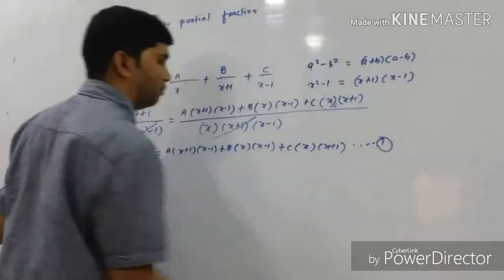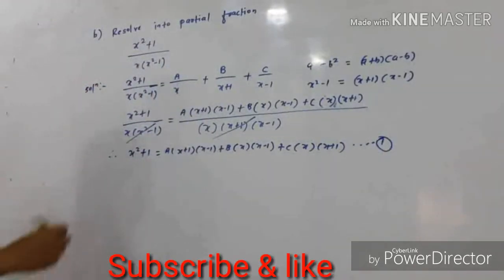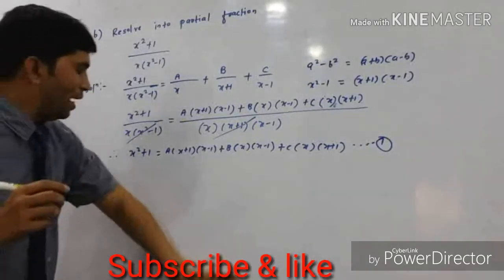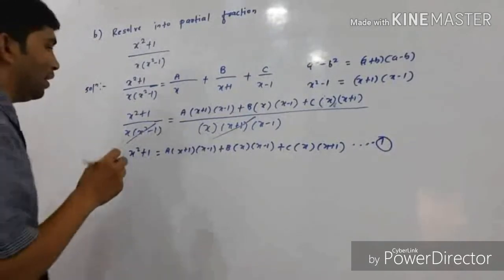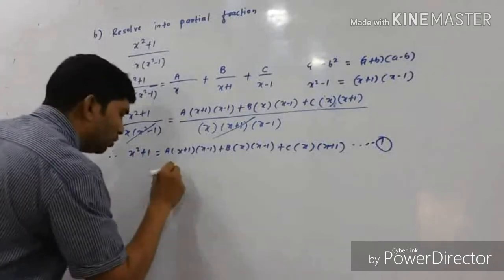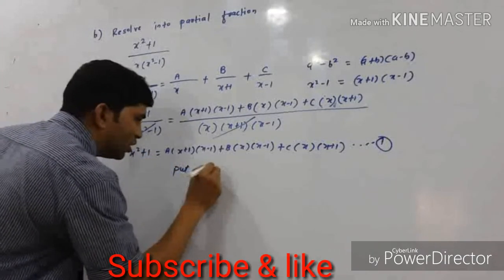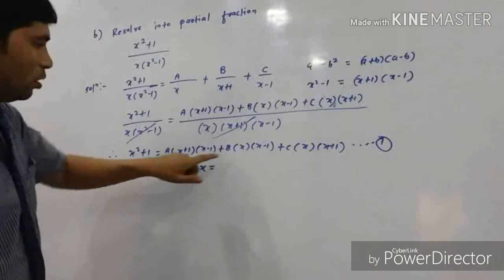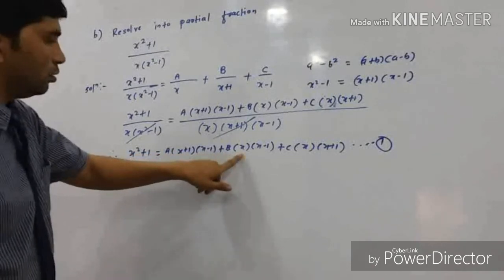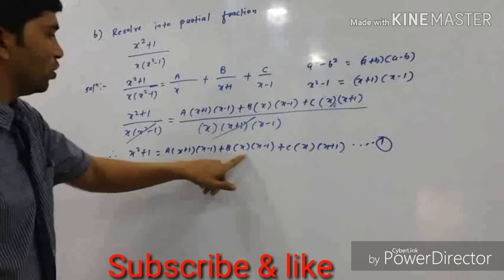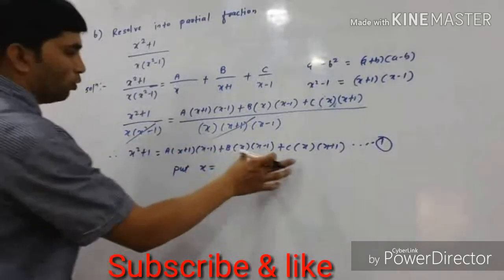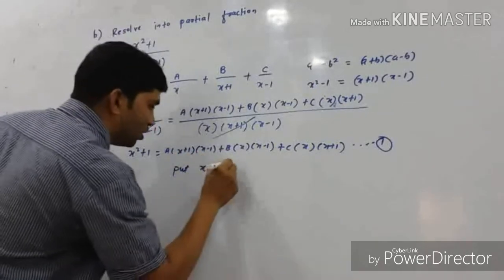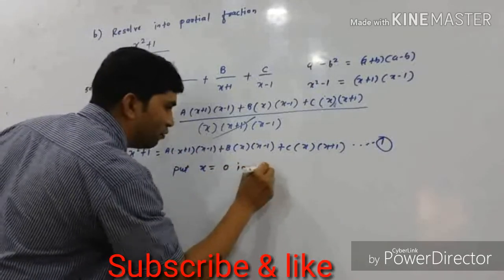After getting equation 1, we substitute values of x to find A, B, and C. First, put x = 0, which makes the B and C terms vanish since they have x as a factor.